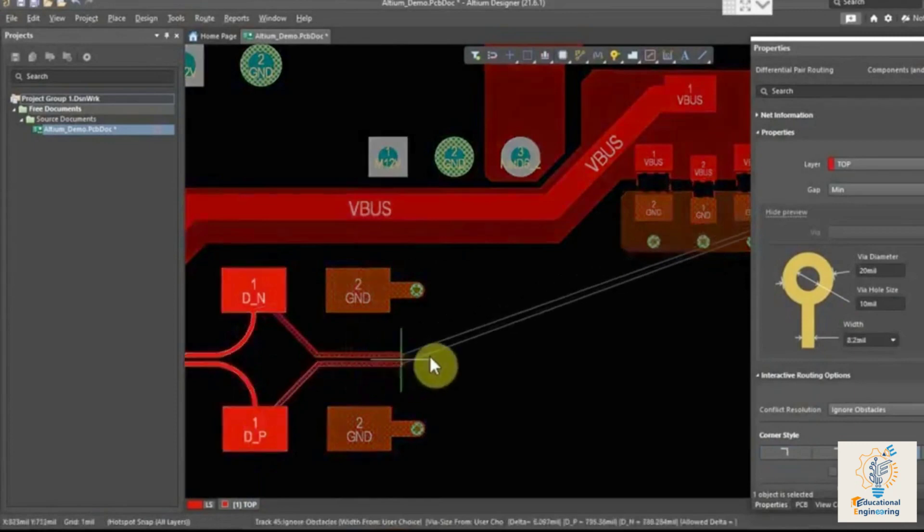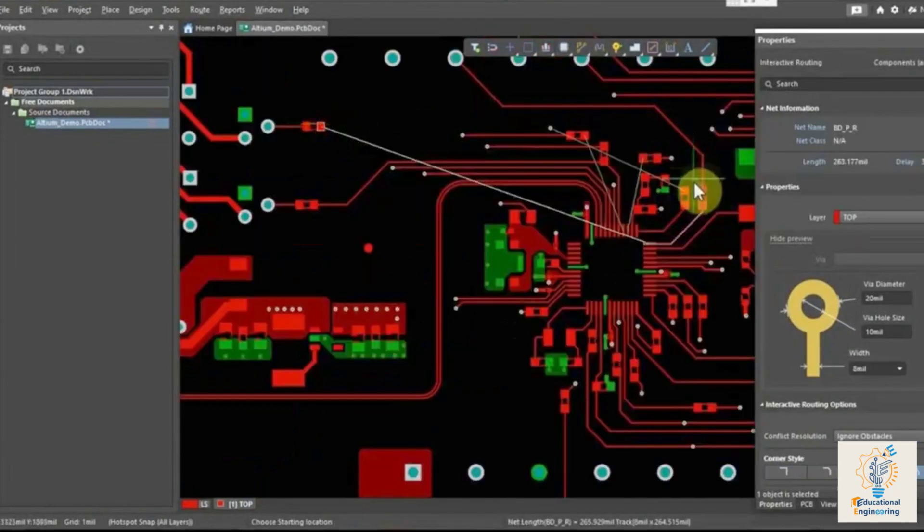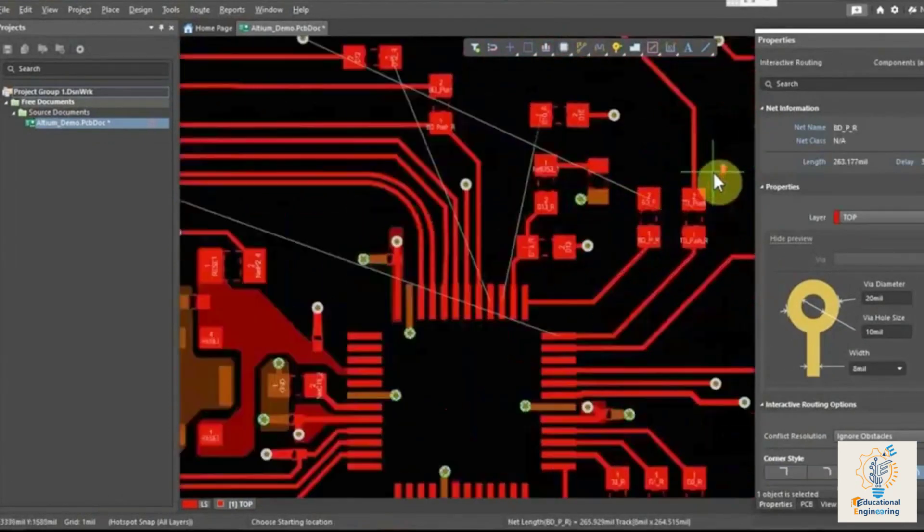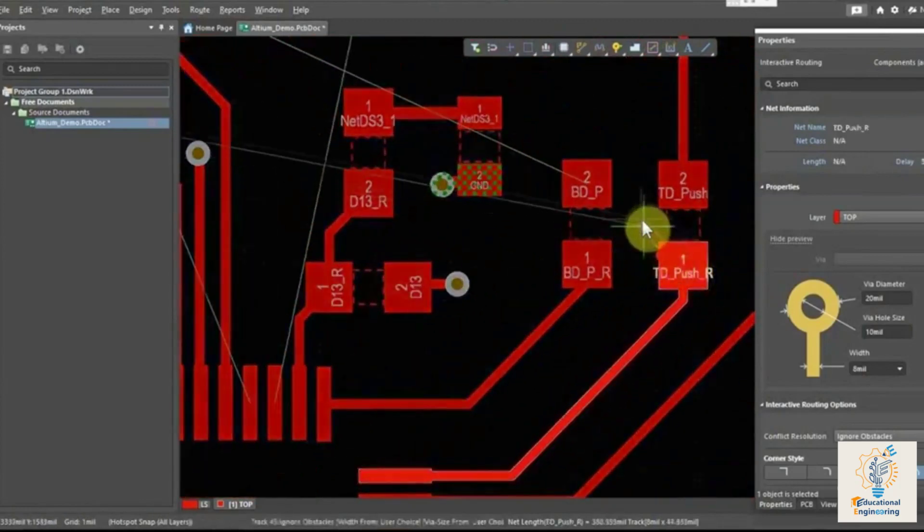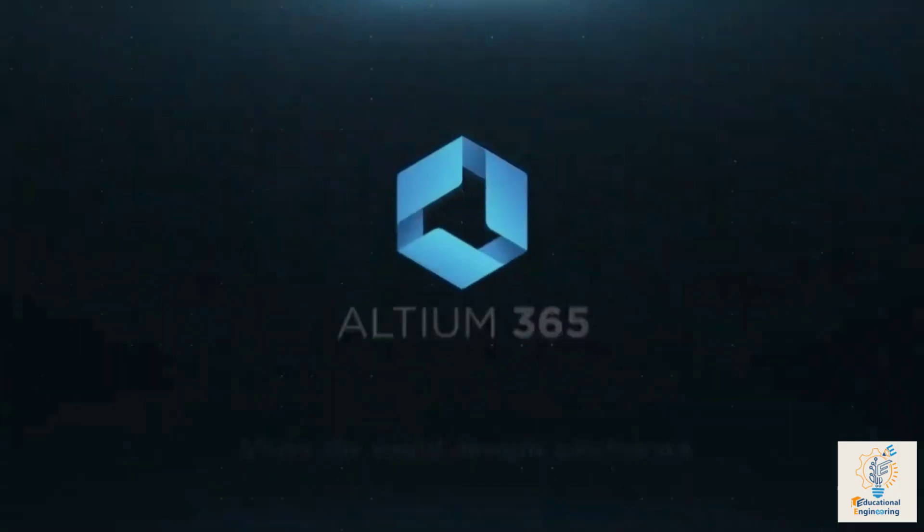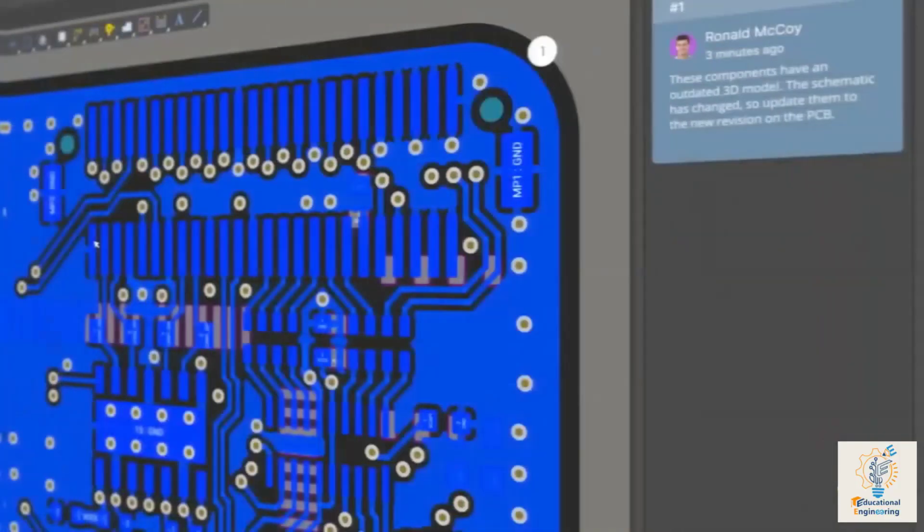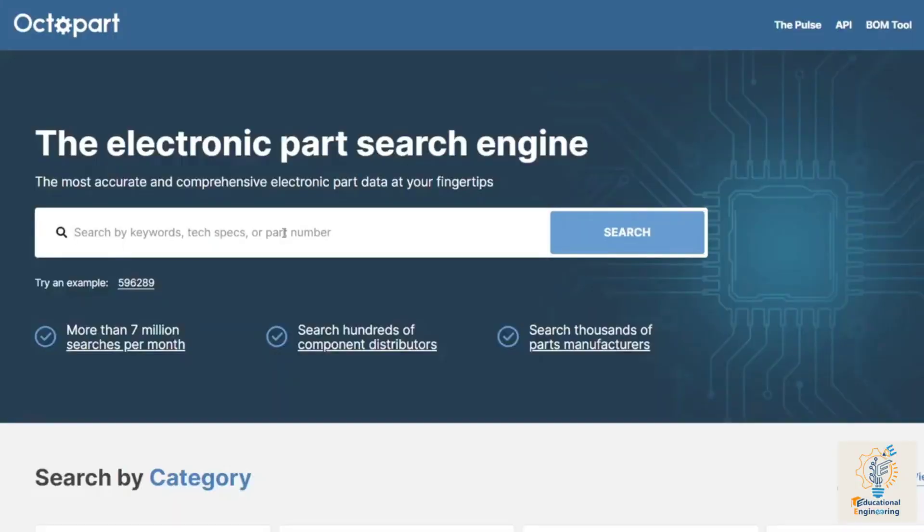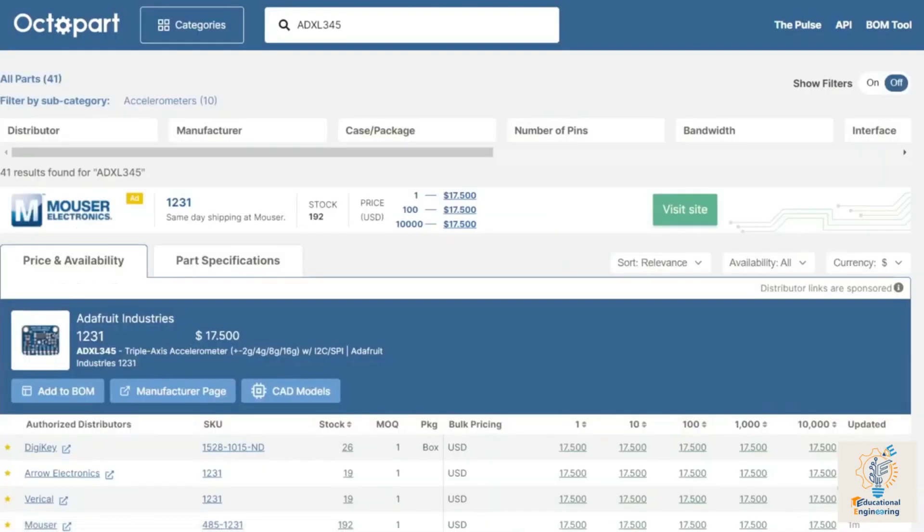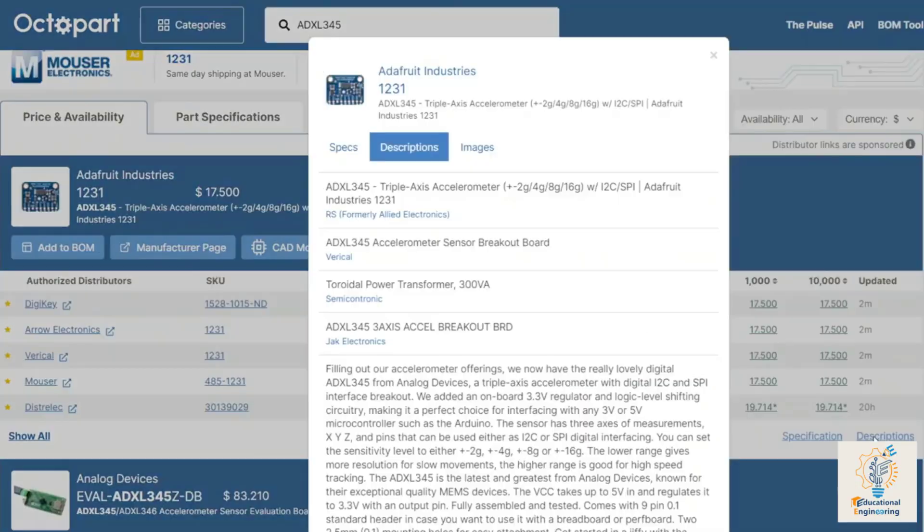Altium is a PCB design software that's both powerful and easy to use. With its intuitive interface and comprehensive set of features, Altium Designer makes it easy to create high-quality PCB designs. And with all-new Altium 365, now you can share your PCB designs with anyone from anywhere with a single click. With Octapart, you can get real-time component insights as you design your PCB in Altium.